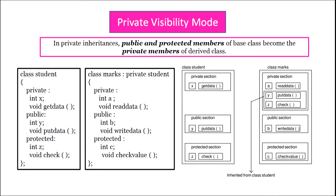In private visibility mode, public and protected members of the base class become the private members of the derived class. Class Marks now inherits Student privately — written as: class Marks colon private Student. After inheritance, the private section of Marks contains a and readData as its own members, plus y and putData (public members of Student) and z and check (protected members of Student). So both public and protected members of Student move to the private section of Marks.